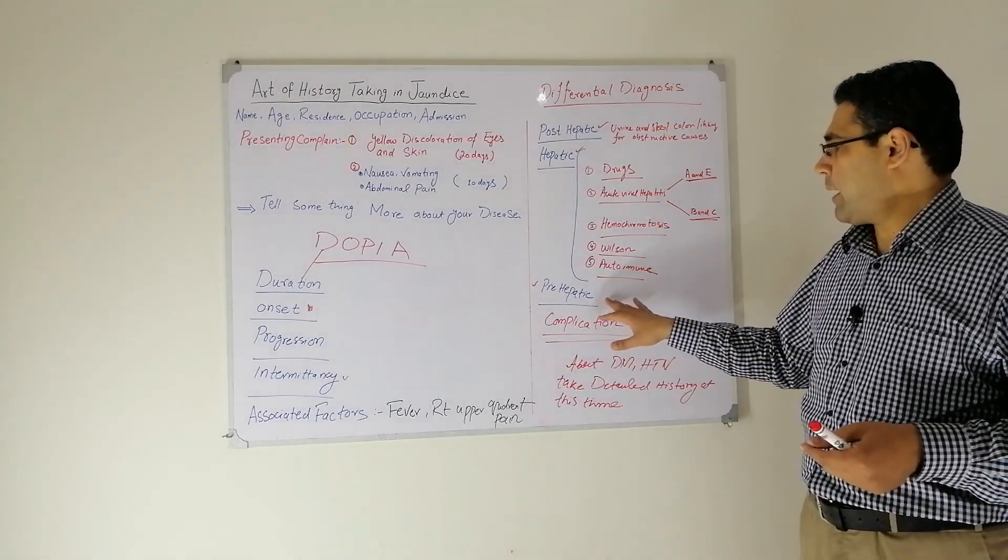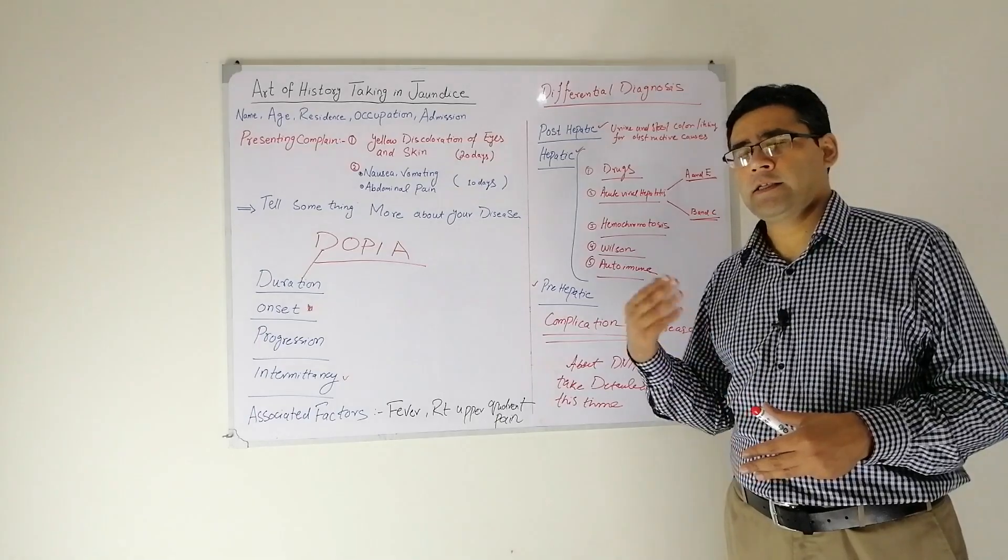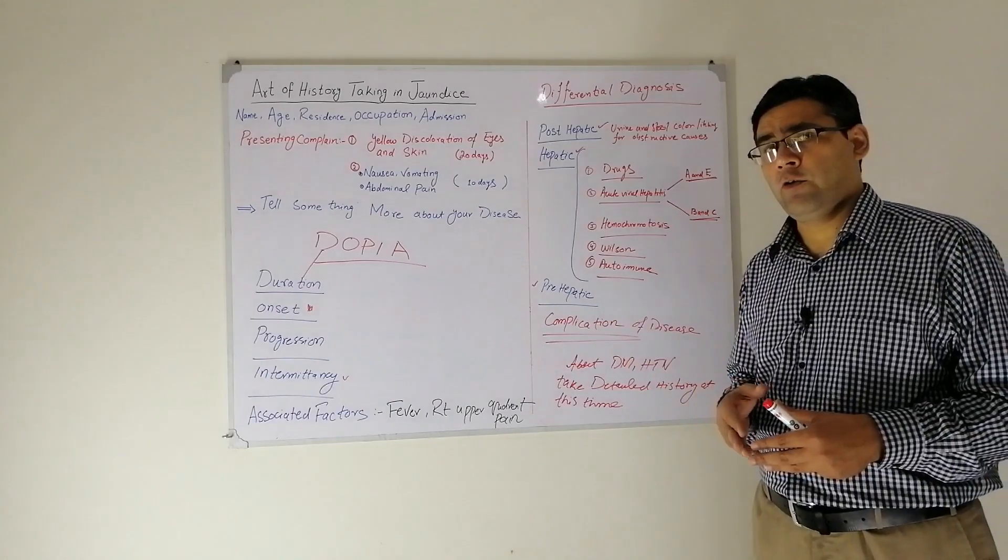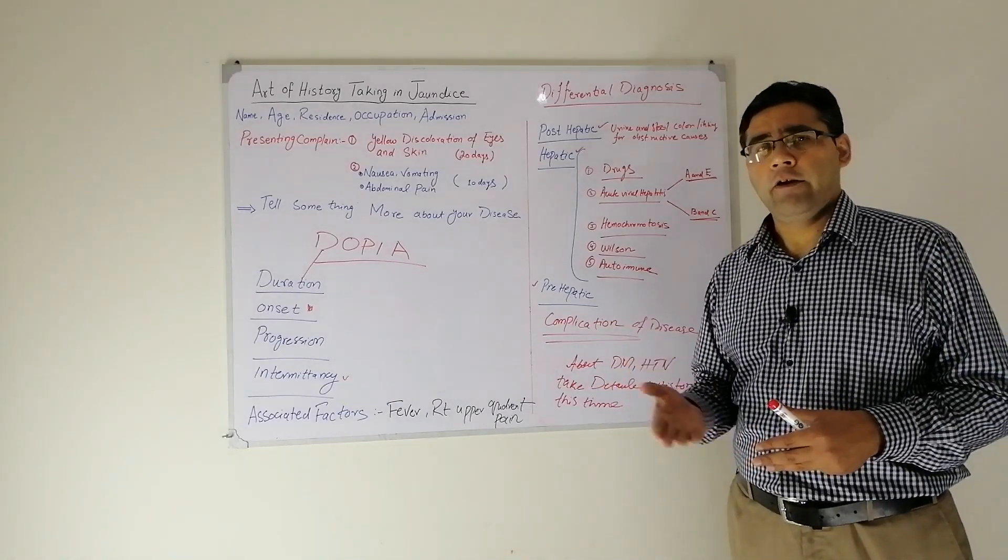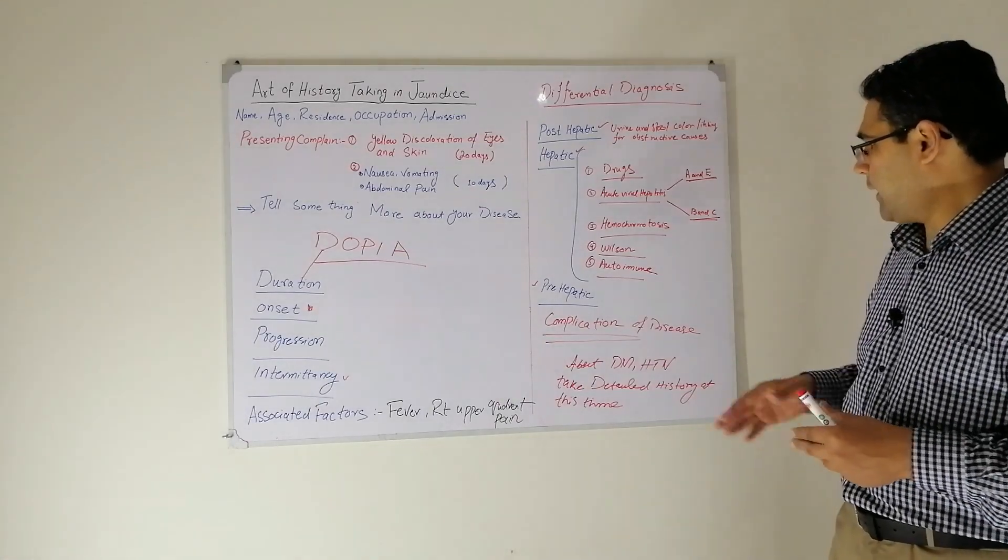Then comes the pre-hepatic causes. In pre-hepatic causes, you will ask if there is family history of such disease. By asking this, you will rule out the hereditary causes of hemolytic anemia. Then comes the complications.